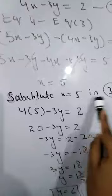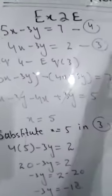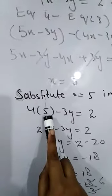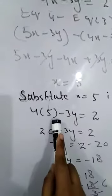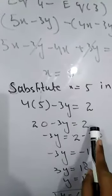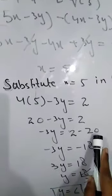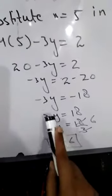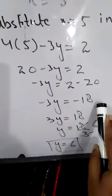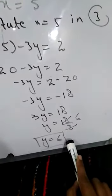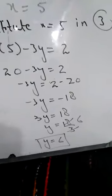Substitute x equals 5 in equation 3. We have 4x minus 3y equals 2. Substitute the value of x: 4 times 5 is 20, 20 minus 3y equals 2. 20 will shift to the other side: minus 3y equals 2 minus 20, which is minus 18. Multiply by minus: 3y equals 18, so y equals 6.